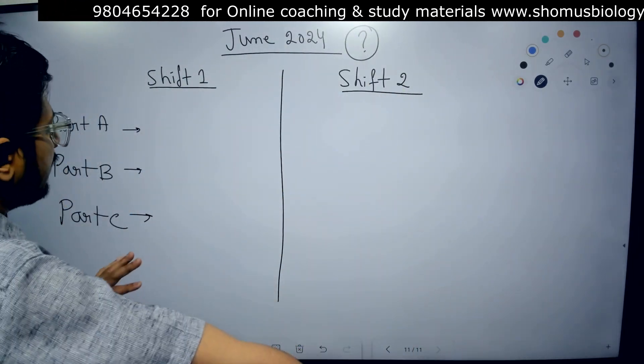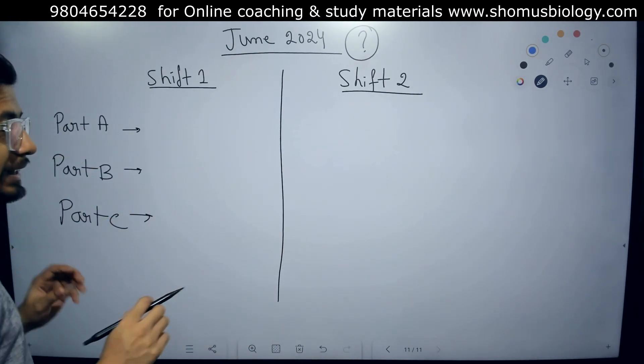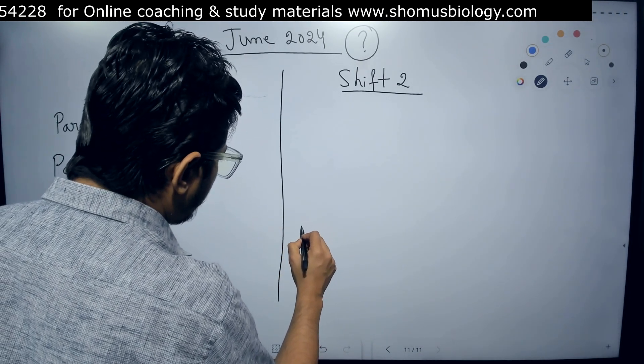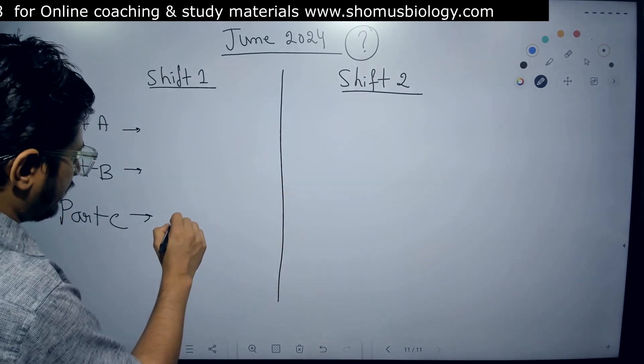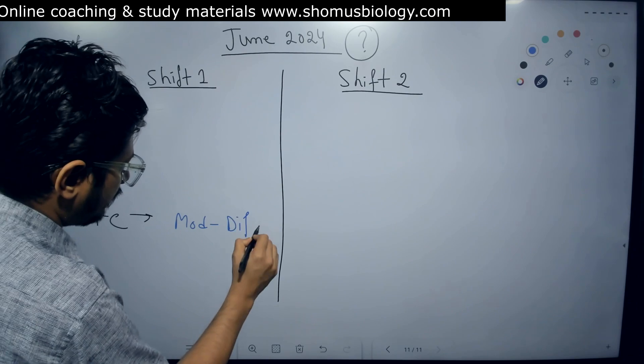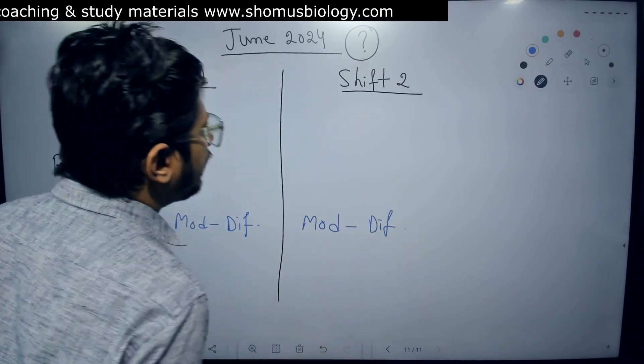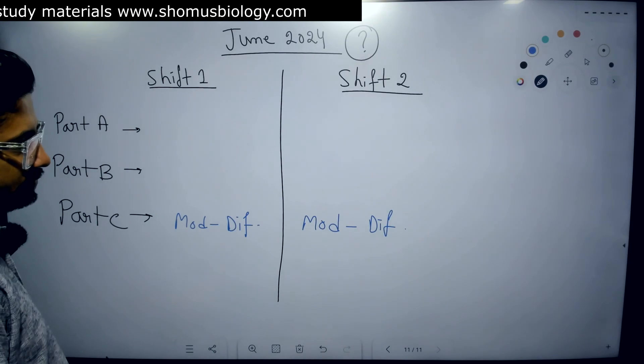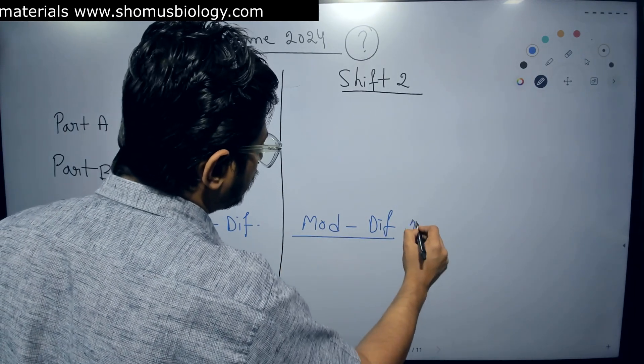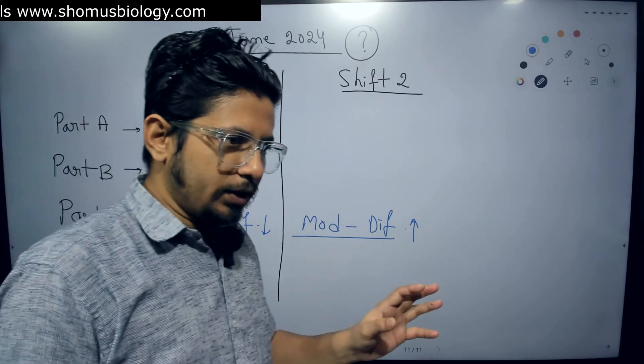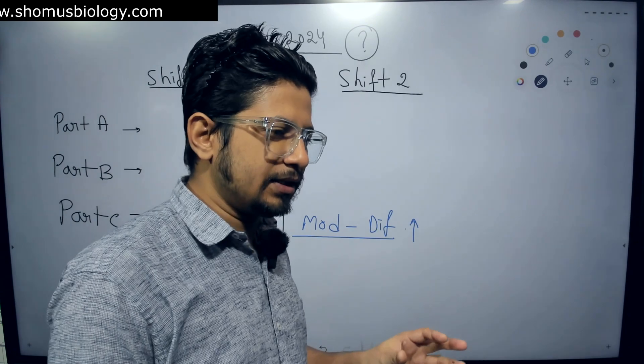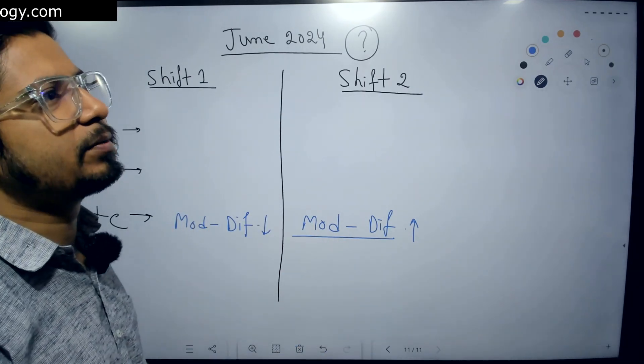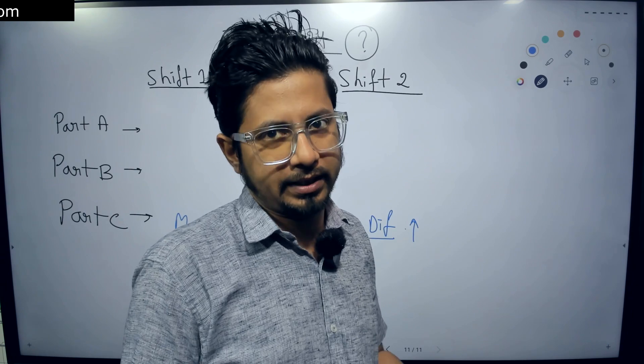Based on the feedback I received, I can tell you one thing: Part C this year is moderate to difficult. It was moderate to difficult in Shift 2 as well as in Shift 1. In both cases, moderate to difficult. The difficulty level we found is more here for Shift 2 than Shift 1, based on sampling all my audiences who reported and my students.